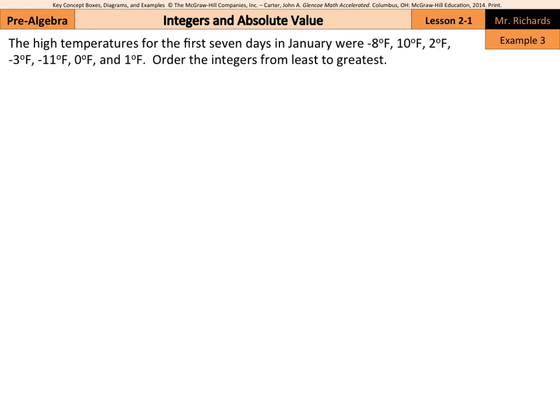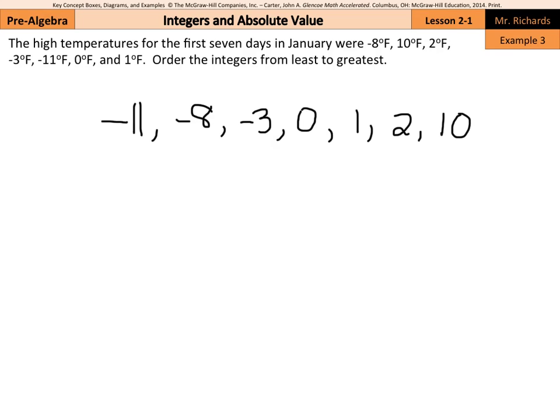The high temperatures for the first seven days in January were negative eight degrees Fahrenheit, ten degrees Fahrenheit, two degrees Fahrenheit, negative three degrees Fahrenheit, negative eleven degrees Fahrenheit, zero degrees Fahrenheit, and one degree Fahrenheit. Order the integers from least to greatest. We need to start with the smallest integer first: negative eleven, then negative eight, then negative three, followed by zero, one, two, and ten. Those are the integers ordered from least to greatest.